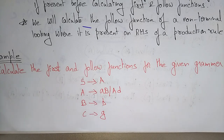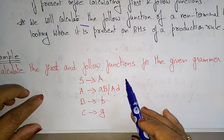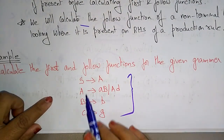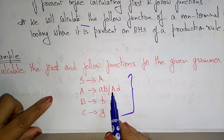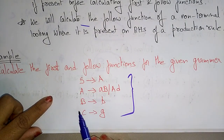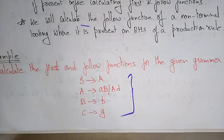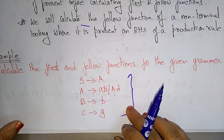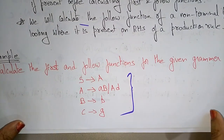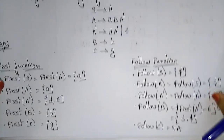Let's see an example. The given grammar is: S → A, A → AB or AD, B → B, C → G. For this grammar, we need to find the FIRST and FOLLOW functions.